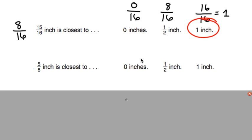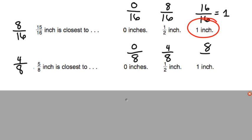For the next example, we're going to look at 5 eighths of an inch. We're going to use the benchmarks of 0 inches, one half of an inch, or 1 inch. What is half of 8? That's going to be 4. So 4 eighths is our benchmark, which represents one half of an inch, and 8 eighths will represent 1 inch. So 5 eighths is closest to 4 eighths, which is the same as one half of an inch.